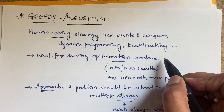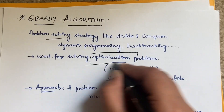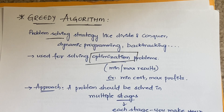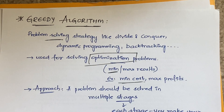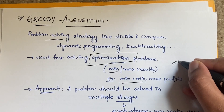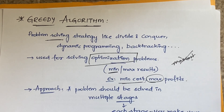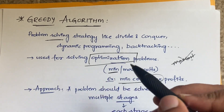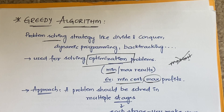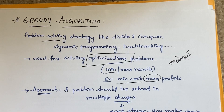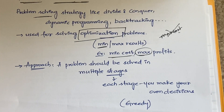Greedy algorithm is used for solving optimization problems. An optimization problem is one where you want either minimum or maximum results — the best result. Minimum cost is considered the best solution, while maximum cost is not. When it comes to profits, profits should always be maximum and cost should always be minimum. So when you want to solve problems requiring minimum cost or maximum profit, you can use this greedy algorithm.